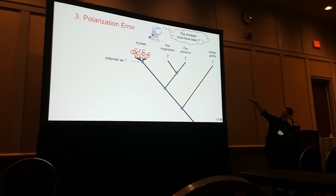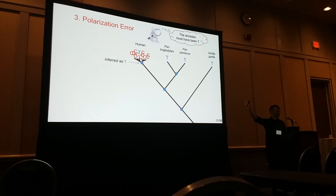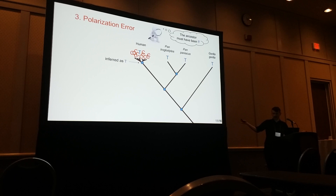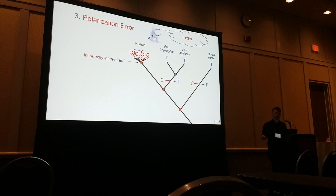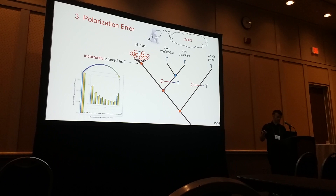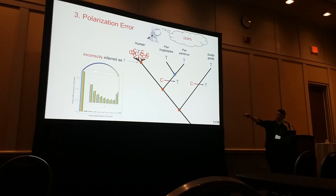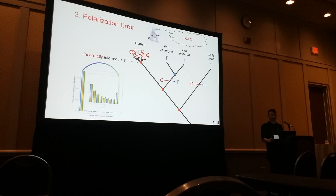Unfortunately, you can get something like this: if the same parallel change happens to create the same derived state in multiple lineages, you would see T's in the outgroups, but you'd be wrong about the ancestral state. So polarization error could have a large effect — what it would do is knock SNPs from the lowest frequency bin that are C-to-T and put them in the highest frequency bin as T-to-C. Could that be the explanation for this phenomenon? Could this actually be the explanation for all of the signal we think is GC-biased gene conversion?